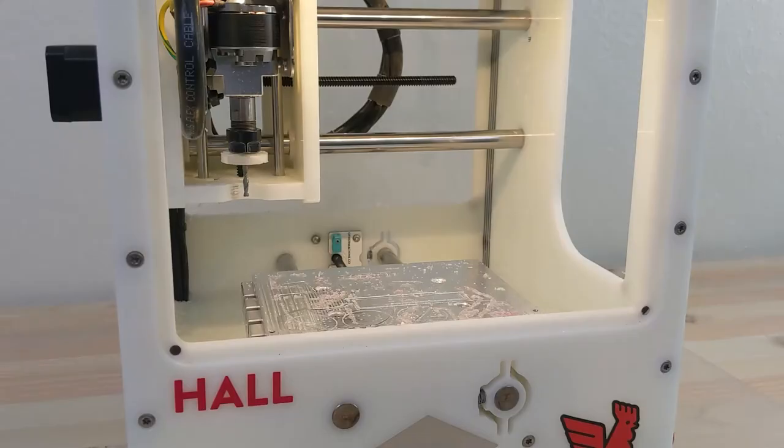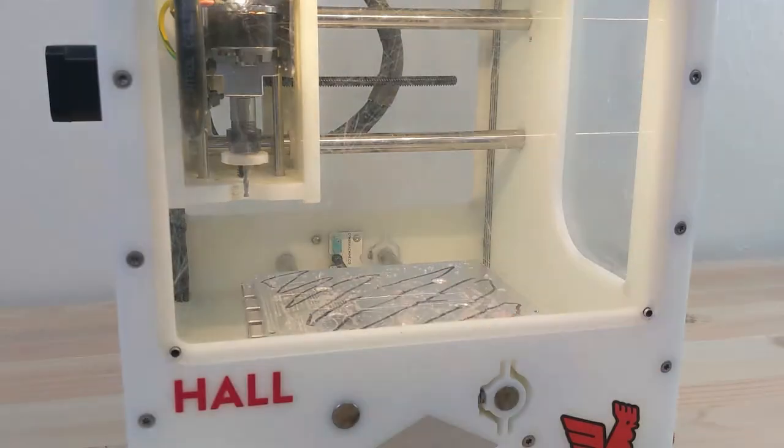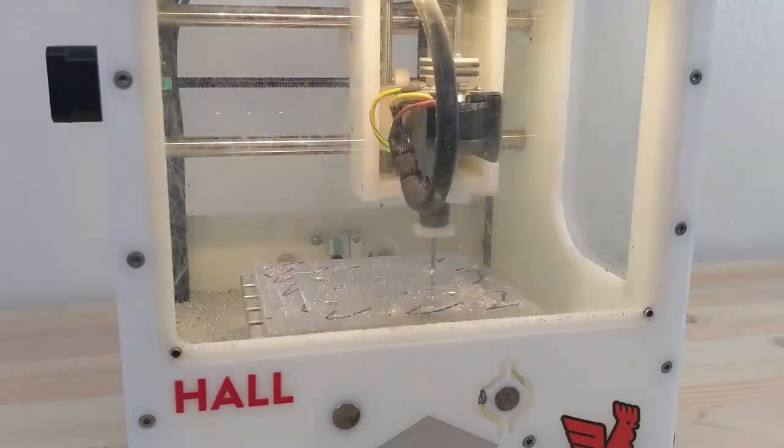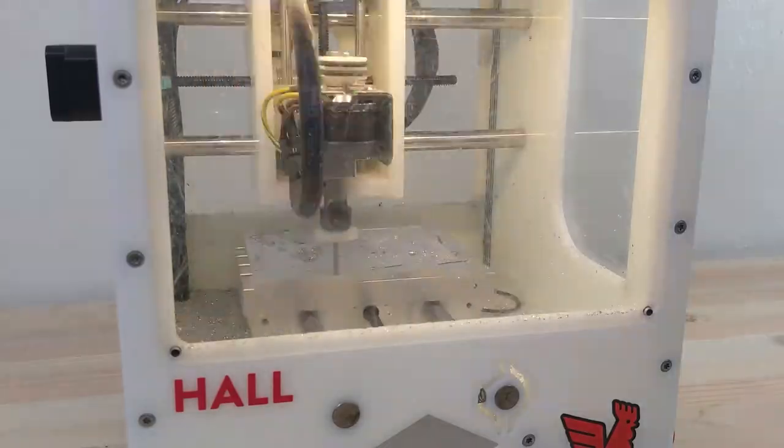If the aluminum spoilboard becomes so damaged that it's difficult for you to use, we'll run a facing operation that will take it down a few tenths of a millimeter to clean it up. This takes about a half an hour, but it's sometimes unavoidable. It's called the spoilboard for a reason. We expect it to take some damage over time. If it becomes very damaged while you're using the machine, please let us know so that we can run a facing operation between appointments.